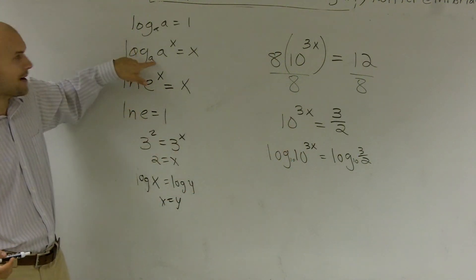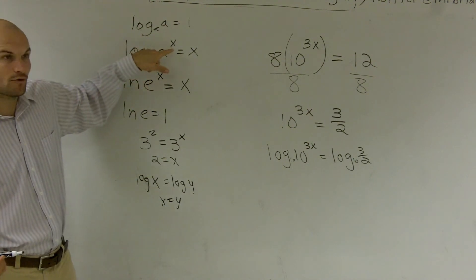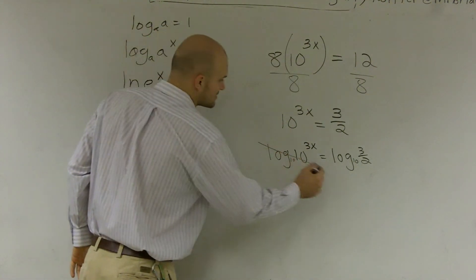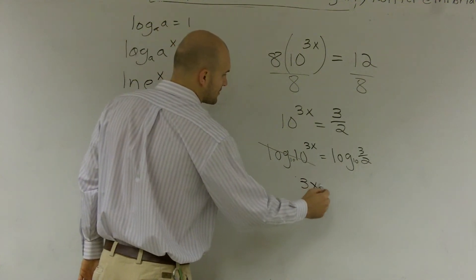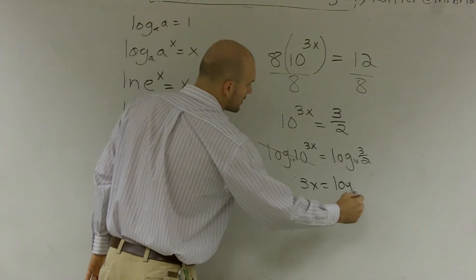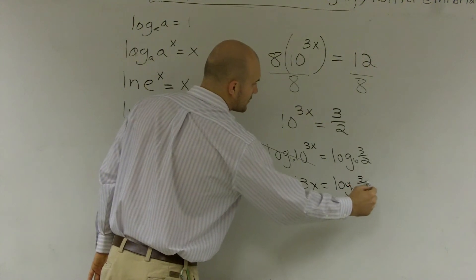So there, by using this property of my logarithms, I know it's going to equal my exponent, which will be 3x. So we can say, you can also say it just cancels off. And I'm left with 3x equals log base 10 of 3 halves.